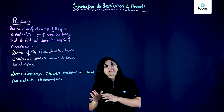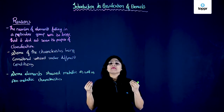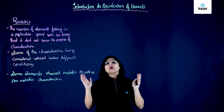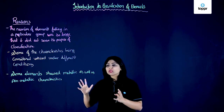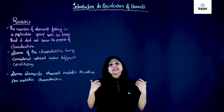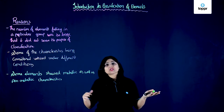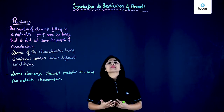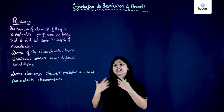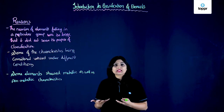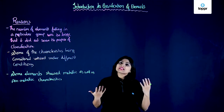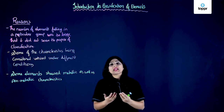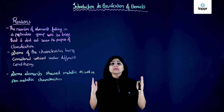The third reason due to which classification of elements became very important was that there were certain elements which showed both metallic as well as non-metallic characteristics. Scientists had already classified elements as metals and non-metals, but then they found out that some elements show both properties. How do we classify them? Scientists also felt that certain metals don't conduct electricity, while many do, and some conduct only under certain other conditions. All these confusions led scientists to find out a proper and good way to classify the elements.